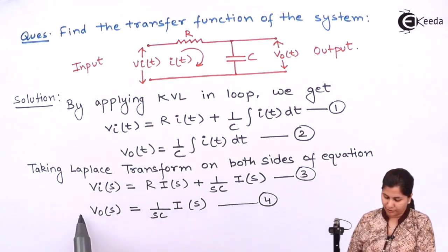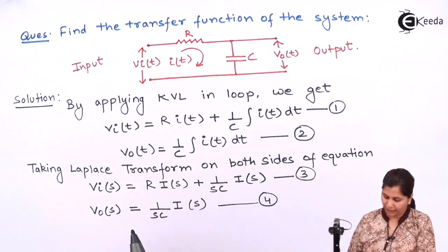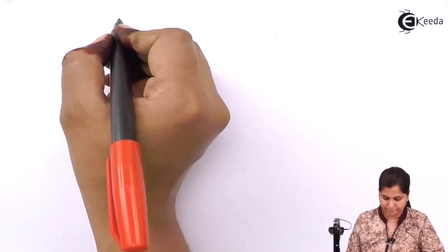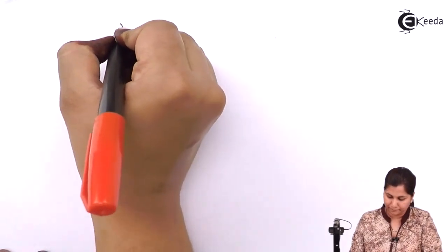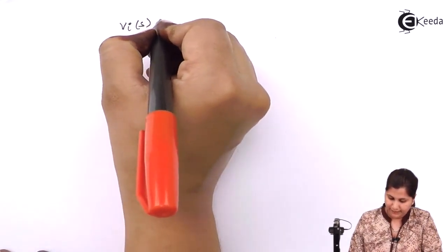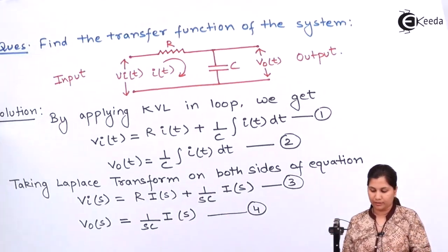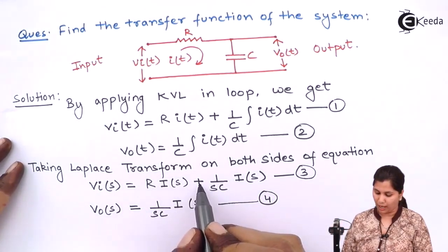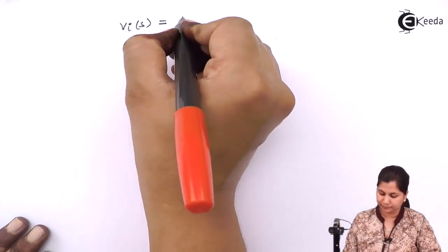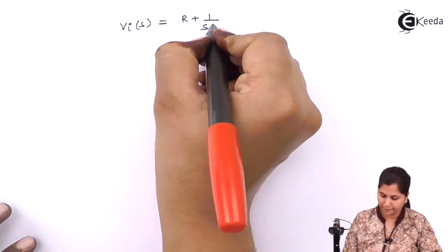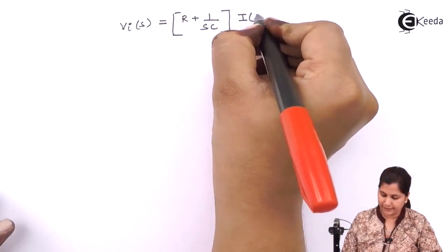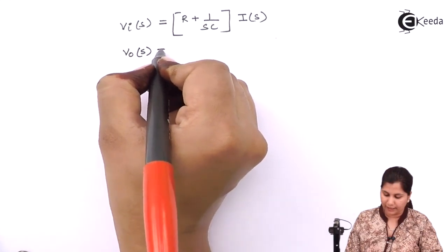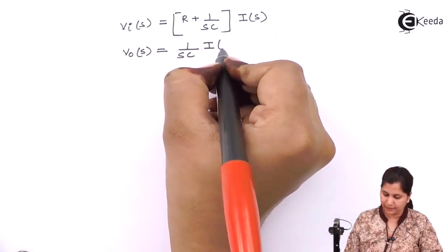Now, from the first equation, if we get the value of IS, it will be VIS equal to, in this we have IS, we can take it as common. So R plus 1 upon SC and IS is taken as common. V0S, we have already obtained that it is 1 upon SC IS.